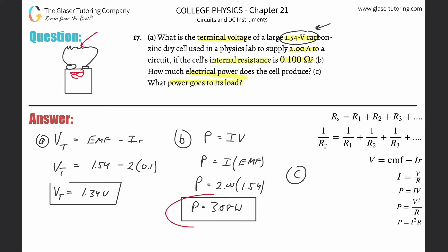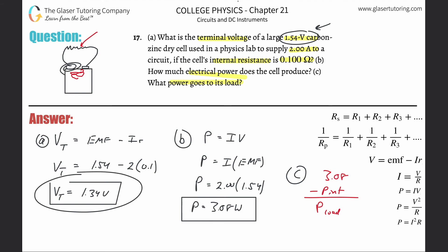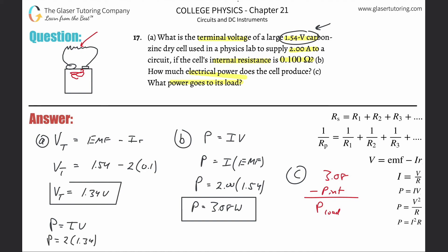If 3.08 watts is the theoretical maximum power, we could subtract the internal power loss to get the power available to the load. Alternatively, since we know the terminal voltage and the current, we simply use P = IV: power equals 2 amps times 1.34 volts, which works out to 2.68 watts.